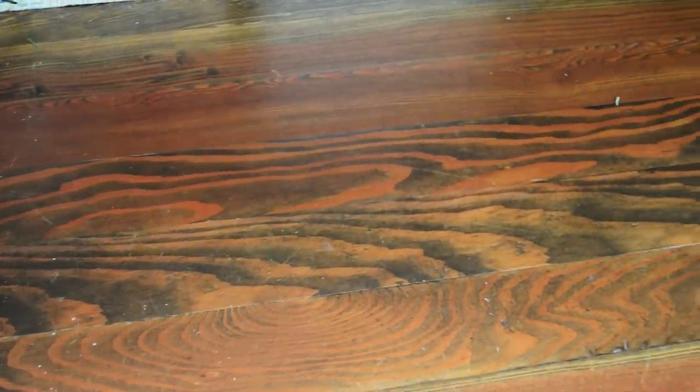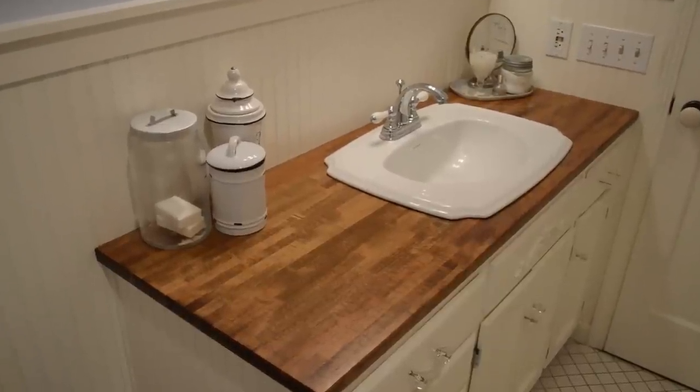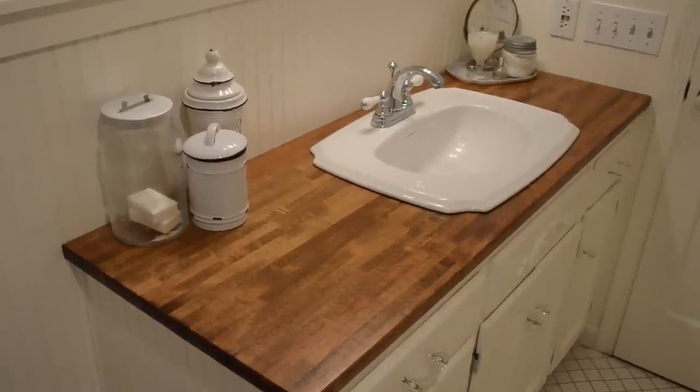In our previous home, we just made our own countertops out of fir. But this time around, there was an IKEA close enough that we could use their butcher block countertops. And we first installed them in our bathroom, and then a few years later, in our kitchen.